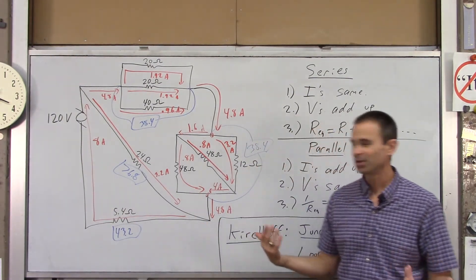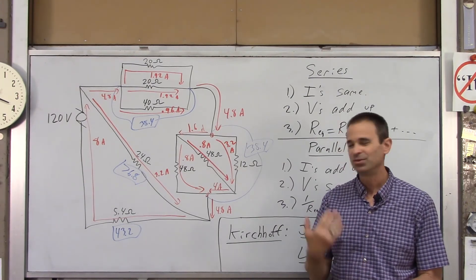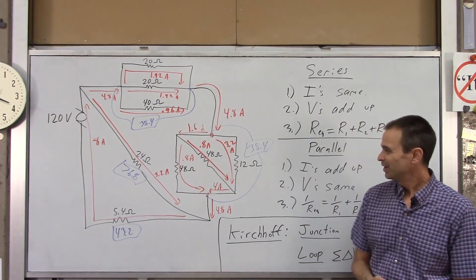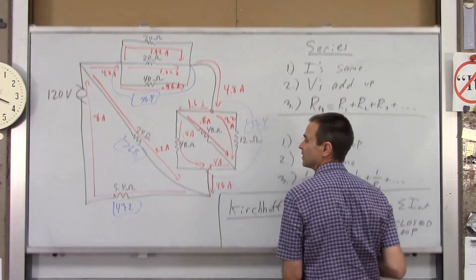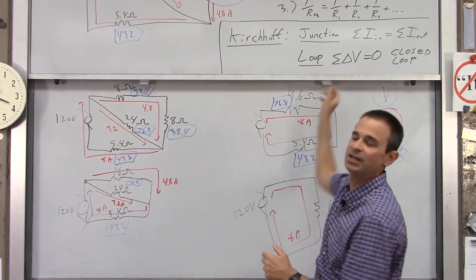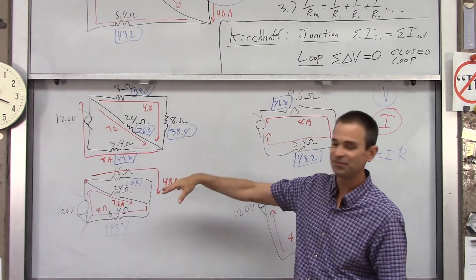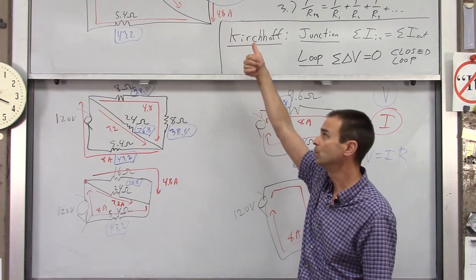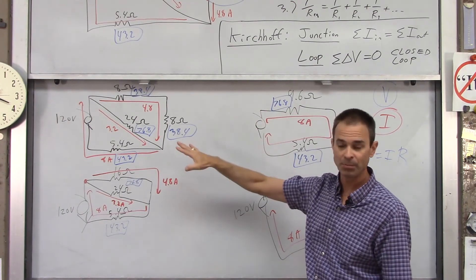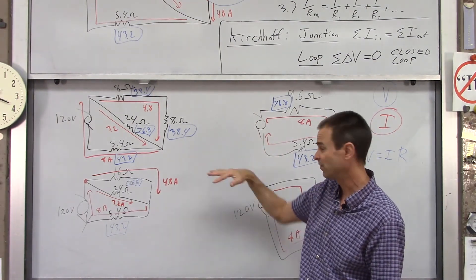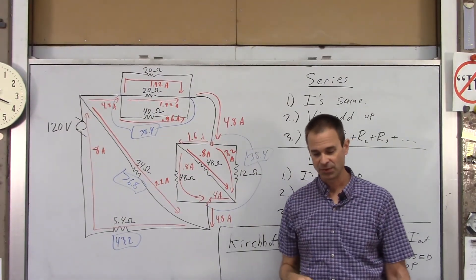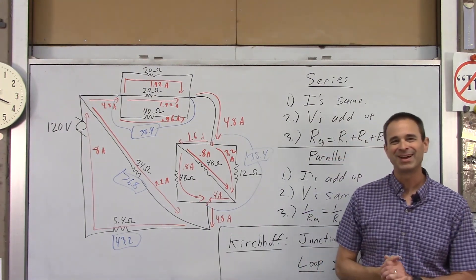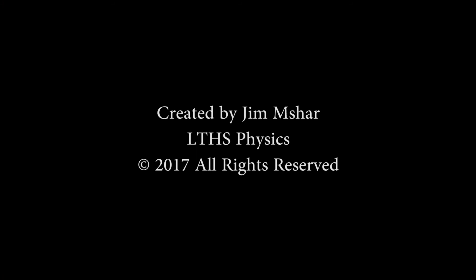We have now determined every current and every voltage for the entire circuit. The most important takeaway: always draw the simplified intermediate circuits, solve for the easy values first, and then translate that information back to the full complex circuit. Thank you very much.